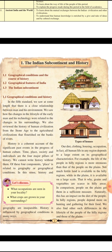For example, the life of people in hilly regions is more strenuous — strenuous means needing a lot of effort — than that of people on the plains. Not much fertile land is available in hilly regions. That is why grains and vegetables are scarce — scarce means insufficient — in hilly areas. In comparison, people on the plains get them in sufficient measure. Naturally, this has an impact on the diet of the people. In hilly regions, people depend more on hunting and gathering for their food.